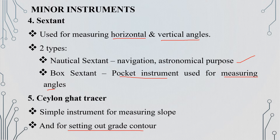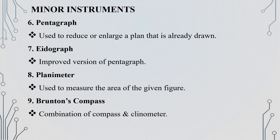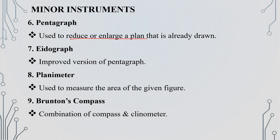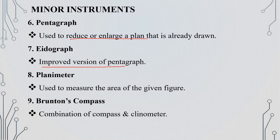The Ceylon ghat tracer is a simple instrument used to set out contours and measure slope. Next is the pentagraph, which is used for copying plans at the same or different scales. The eidograph is an improved version of the pentagraph. The planimeter is used to measure areas — both planimeter and pentagraph are important instruments.